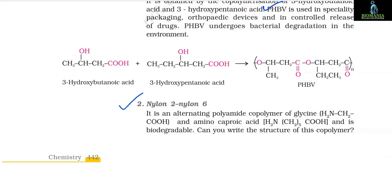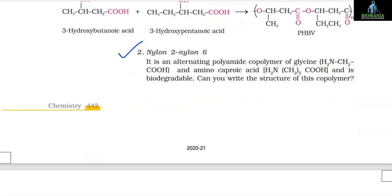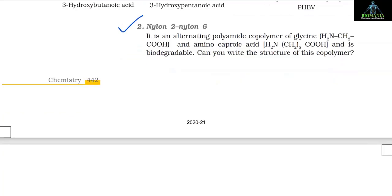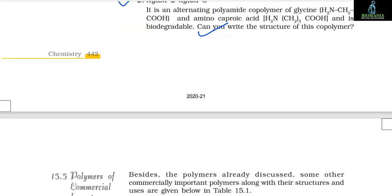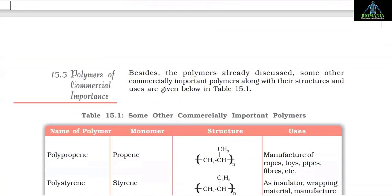2. Nylon-2-Nylon-6: It is an alternating polyamide co-polymer of glycine (NH₂–CH₂–COOH) and aminocaproic acid (NH₂–(CH₂)₅–COOH) and is biodegradable.